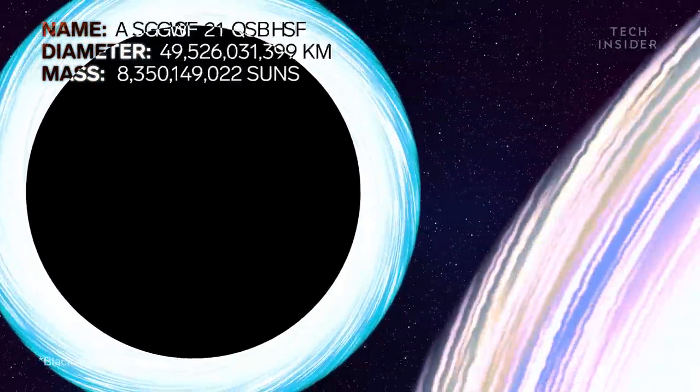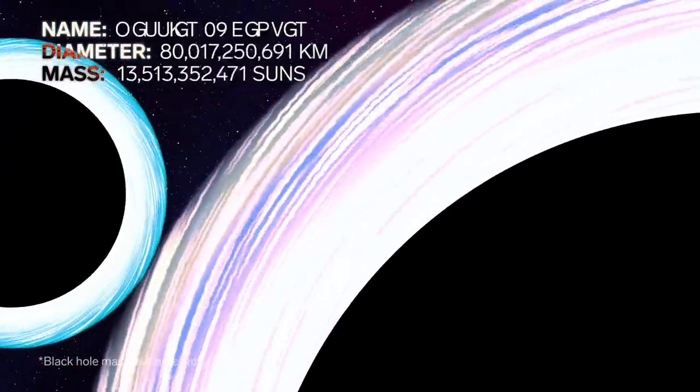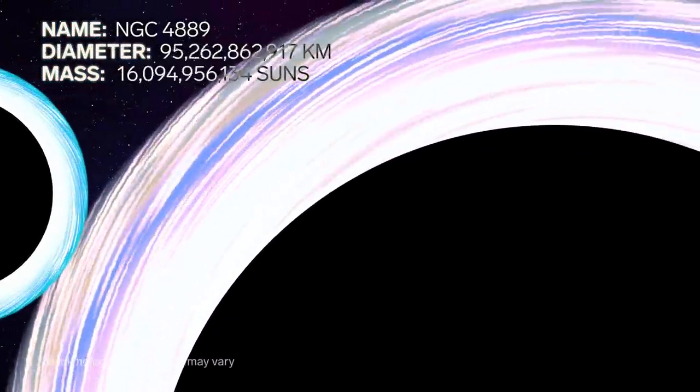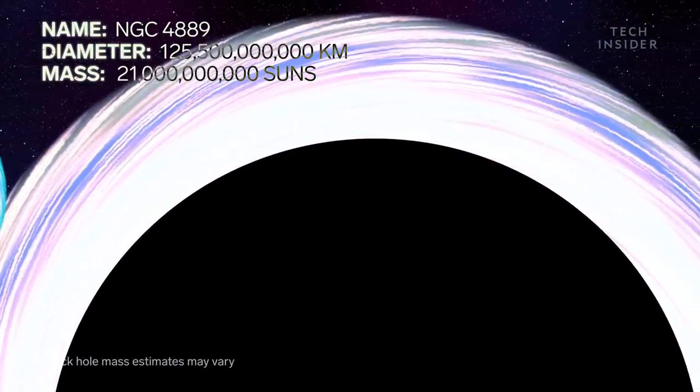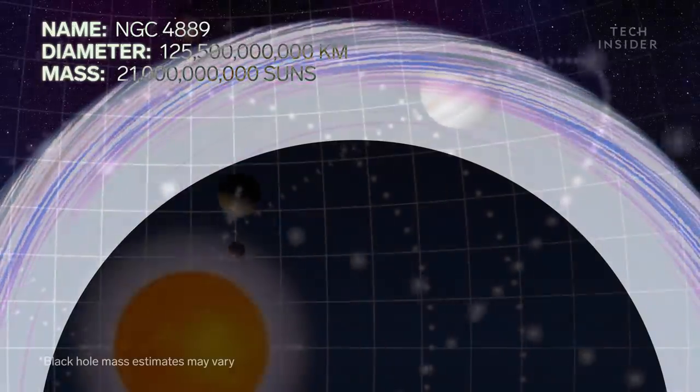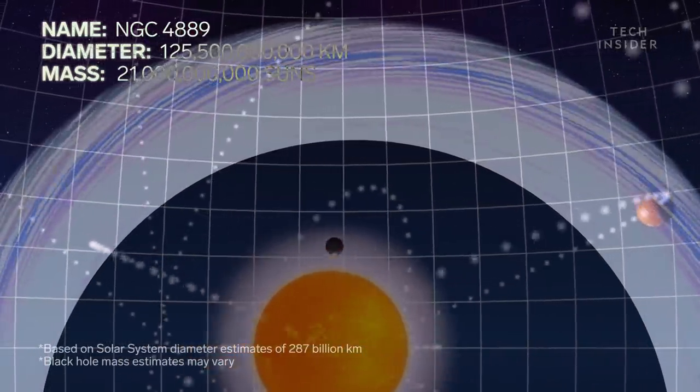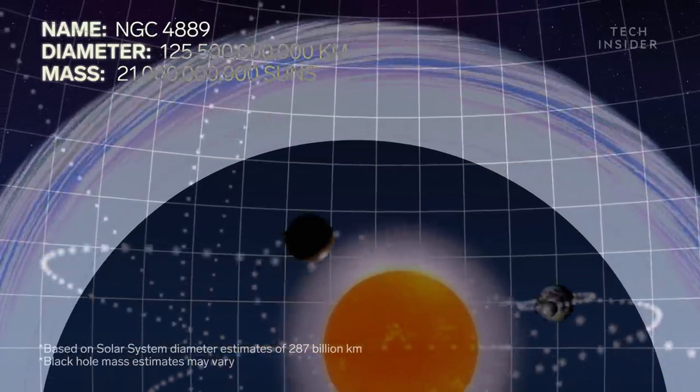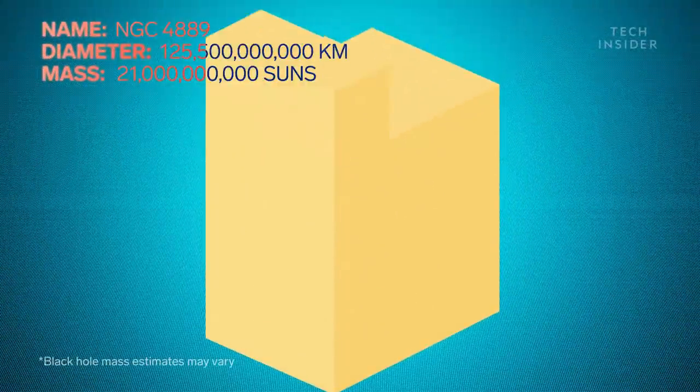So we have to look at one of the most massive of all supermassive black holes. It has a diameter of about 78 billion miles. For perspective, that's about 40 percent the size of our solar system, according to some estimates. And it's estimated to be about 21 billion times the mass of our sun.